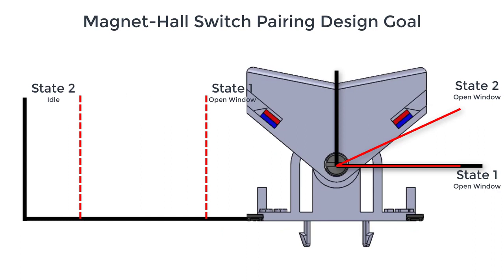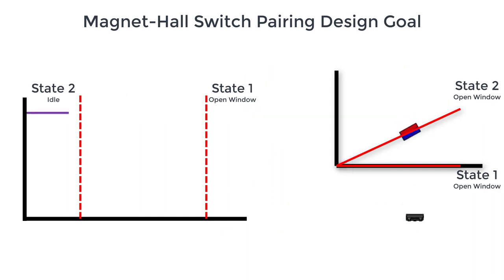Upon selecting the magnet, we set a design goal of our magnet triggering our Hall Effect switches BOP before State 1 is reached, as well as triggering BRP before returning past State 2.